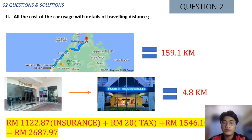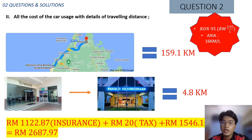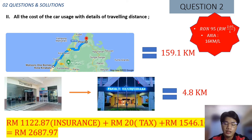For the cost of car usage, he needs to pay for insurance, road tax, and fuel consumption. Kamaluddin needs to go back to his hometown twice a month — the total distance from Kota Kinabalu to Pitas is 159.1 kilometers. Assuming he goes to faculty six days a week, the distance from Tower B to the faculties is 4.8 kilometers. Using RON95 at 2.05 ringgit per liter and an Axia fuel consumption of 16 kilometers per liter, the total car cost is 2,607.70 ringgit.